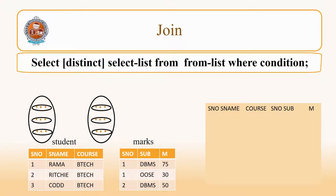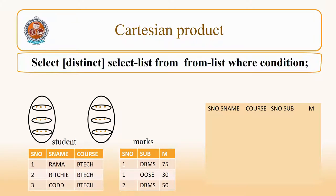Let us see how to obtain data from more than one table using a join. A join uses the SELECT statement with more than one table name in the FROM clause, and in the WHERE clause you mention the joining condition. Let us first see a join without a condition, known as a Cartesian product. If you give SELECT * FROM student, marks (the two table names without any condition), it gives you the Cartesian product — all combinations of all the rows of the two tables.